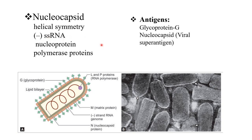It contains negative-sense single-stranded RNA, hence it is a negative-sense ssRNA virus. Their RNA polarity is opposite to that of mRNA, so they cannot directly translate into proteins. Therefore, the negative-stranded RNA is first transcribed into positive single-stranded RNA using viral RNA polymerases, then translated into protein. It also acts as a template for replication to form copies of negative-stranded RNA.